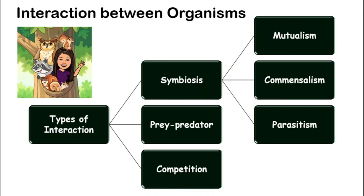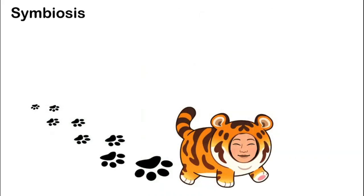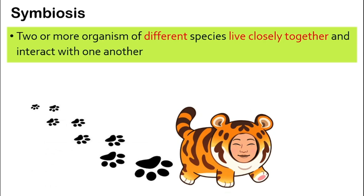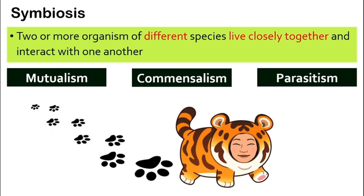We will look at the biggest group first, that is symbiosis. What is the meaning of symbiosis? Symbiosis is an interaction when two or more organisms of different species — remember the word species? We talked about this in the previous video — live very closely together and actually interact with each other. That relationship is called symbiosis. Symbiosis has three different types: mutualism, commensalism, and also parasitism.